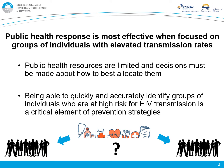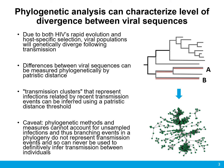The response of public health agencies to HIV transmission is most effective when it can be focused on groups of individuals that are at elevated risk of transmitting the virus. Public health resources are limited, and therefore decisions must be made about how to best allocate them. A critical element of allocating resources effectively is being able to quickly and accurately identify groups of individuals who are at the highest risk of transmitting.